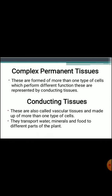Our next topic is complex permanent tissue. These tissues are formed of more than one type of cell which perform different functions, and are represented by a group of cells known as conducting tissue. Conducting tissues are also known as vascular tissue. They help in the transportation of water, minerals, and food to different parts of the plant. Conducting tissues are of two types: xylem and phloem.